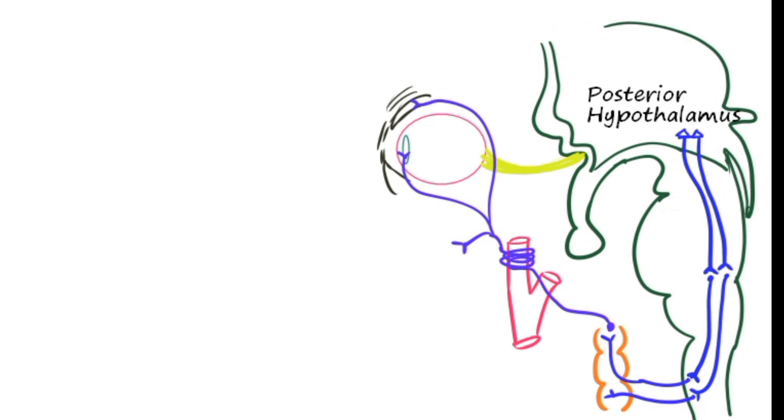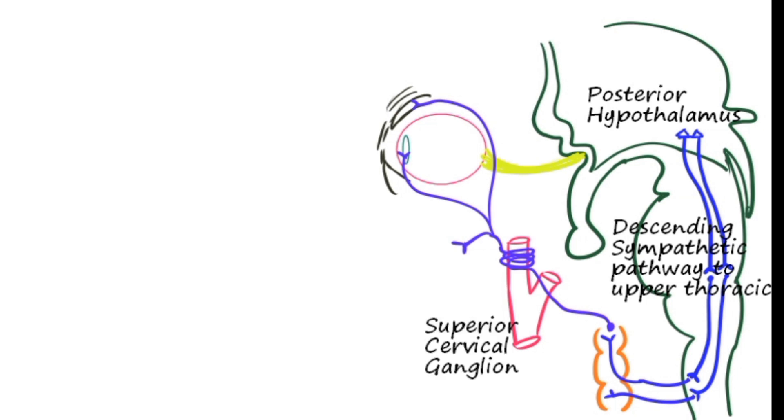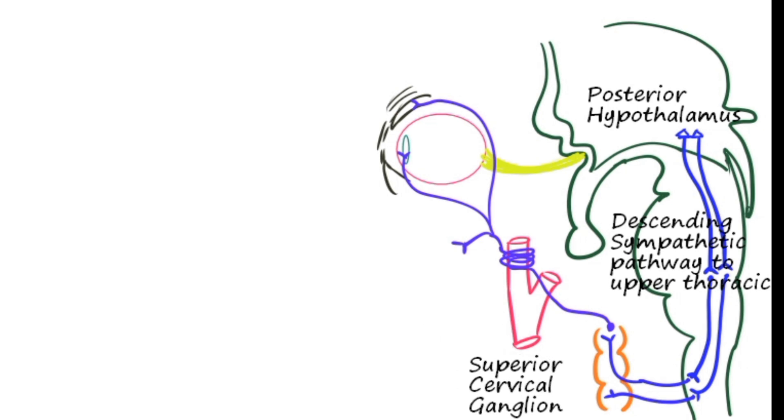Here the structures are: posterior hypothalamus and descending sympathetic pathway to the upper thoracic spinal cord, superior cervical ganglion.